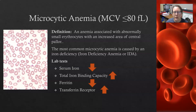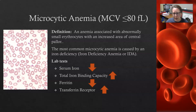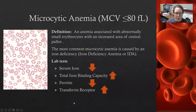The lab tests for iron deficiency anemia include serum iron, total iron binding capacity, ferritin, and transferrin receptor. Serum iron and ferritin — the storage form of iron — would both be decreased. The total iron binding capacity would be increased because the body has a higher ability to bind iron in the blood since it's looking for more. Similarly, the transferrin receptor — the protein that ferries iron — is increased because there's less iron being transported and the body is seeking more.